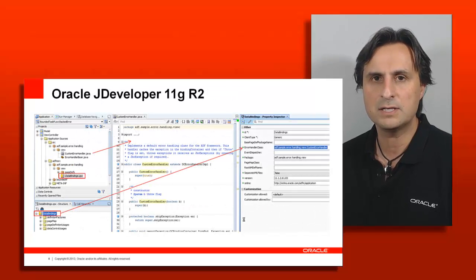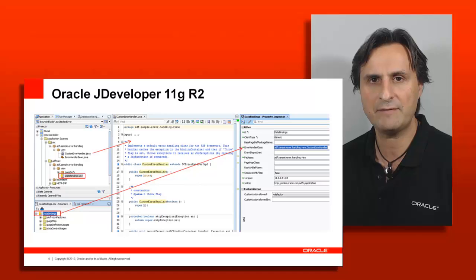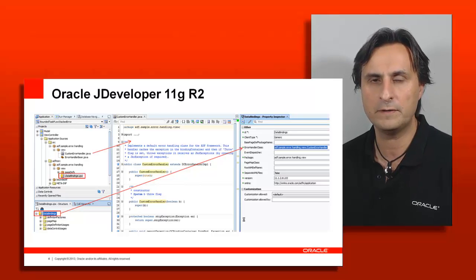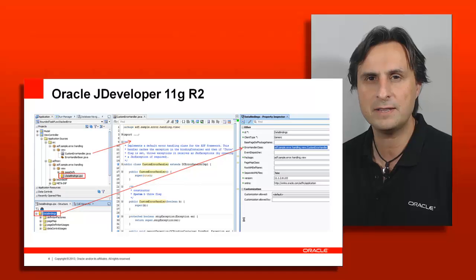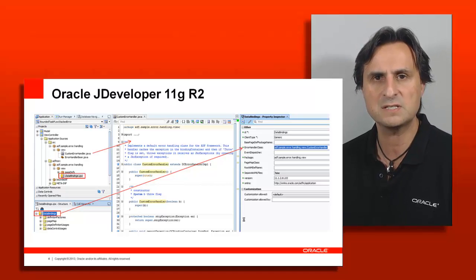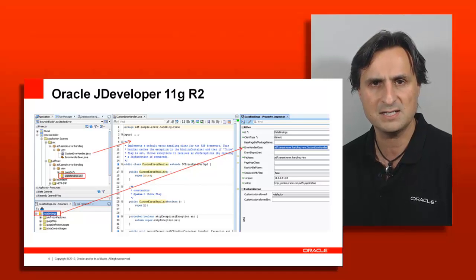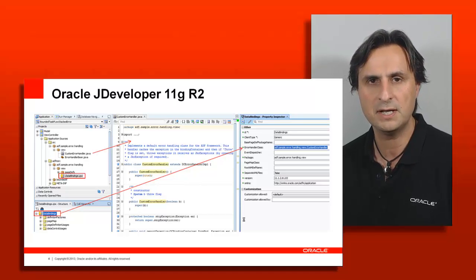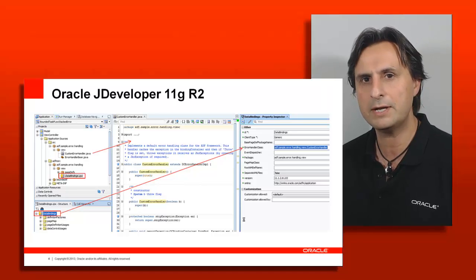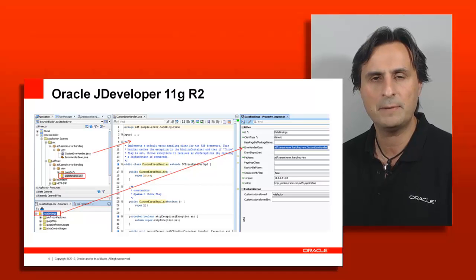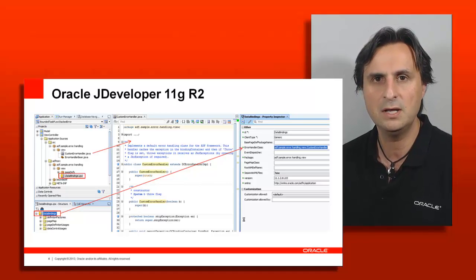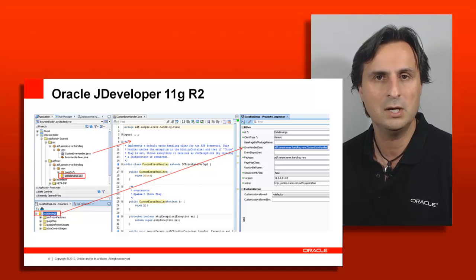The data binding CPX file is contained and available in all of the view layer projects, including sub-projects — they all have a data binding CPX file. The responsibility of this file is to act as a mapping of an incoming request for a view and to find the associated binding container, the page def file. In addition, it has a name for the data control being used in the context of the view controller project, so there is no direct relation between the page def file and the data control, but an indirect relation going through the data binding CPX file. So if you need to change the data control for whatever reason, you're just changing the data binding CPX file and all the relative addressing will stay the same.